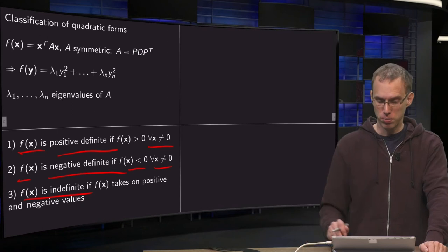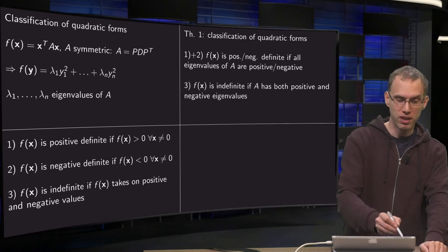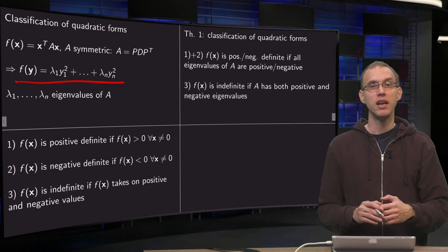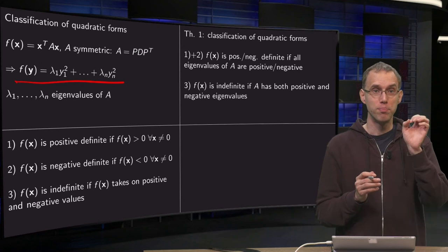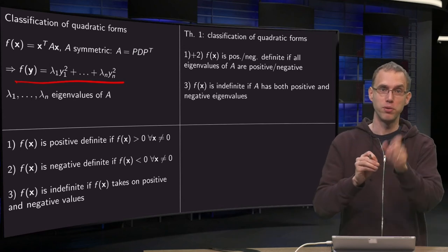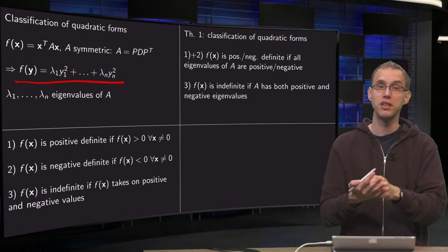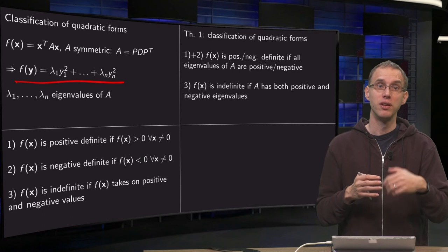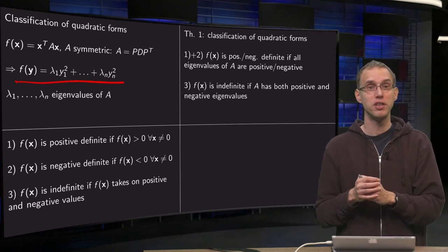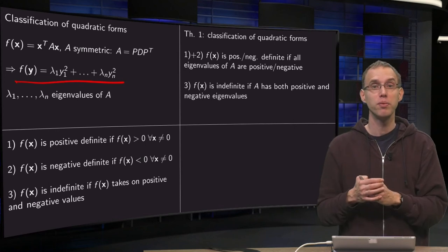So that is the third option. Now how can you see that? Actually it is pretty easy if you look at the expression over here. Suppose all your eigenvalues are positive. Then you have a positive number times square plus positive number times square plus positive number times square, which will always be positive. So if all your eigenvalues are positive, your f of y is always positive and your quadratic form will be positive definite.